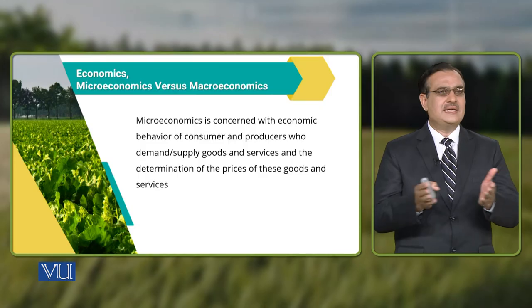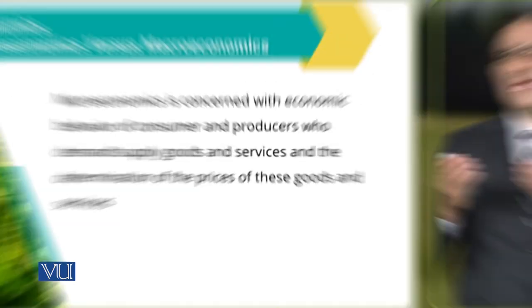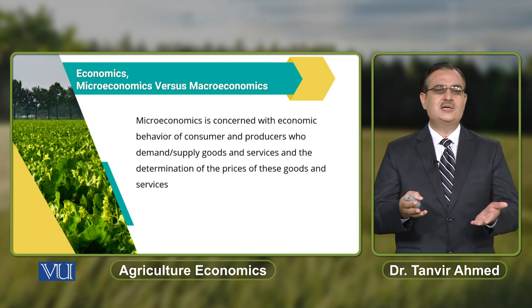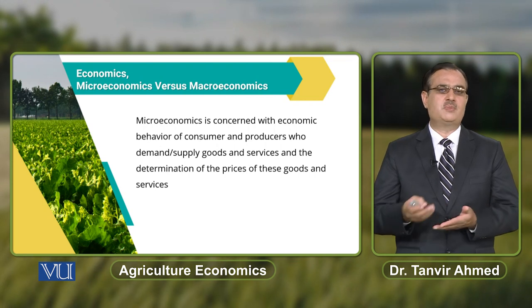When we talk about Micro Economics, it is concerned with the economic behavior of the consumer and producer. The consumer will demand goods and services while producers are supplying goods and services. The prices of these goods and services have some role in the choice of the consumer and producer.